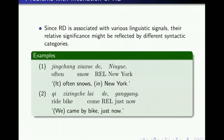Second, from an economic point of view, there might be redundant information. Since RD is associated with various linguistic signals, the relative significance might be reflected by different syntactic categories. For example, in the first sentence the right-dislocated part is a nominal phrase, while in the second sentence the right-dislocated part is a non-nominal phrase.